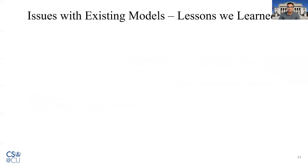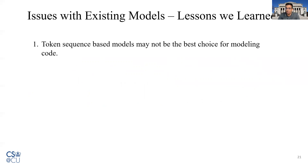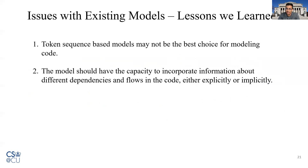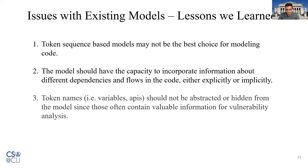The lessons we learned while investigating different models are: token sequence-based models may not be the best choice for modeling source code; the model should have the capacity to incorporate information about different dependencies and flows in the code, either explicitly or implicitly; and token names — that is, the variables and APIs — should not be abstracted or hidden from the model, since those often contain valuable information for vulnerability analysis.